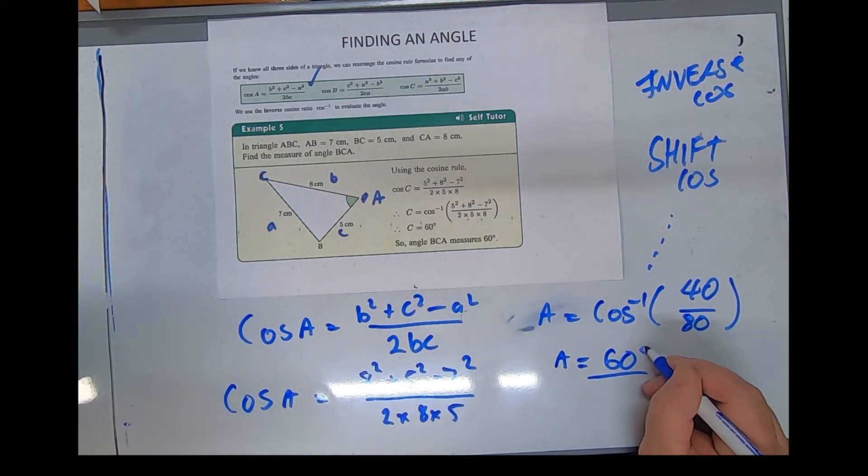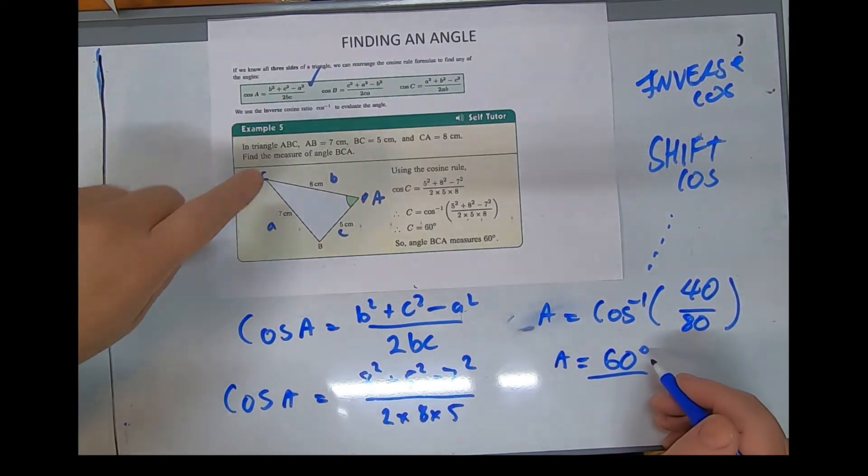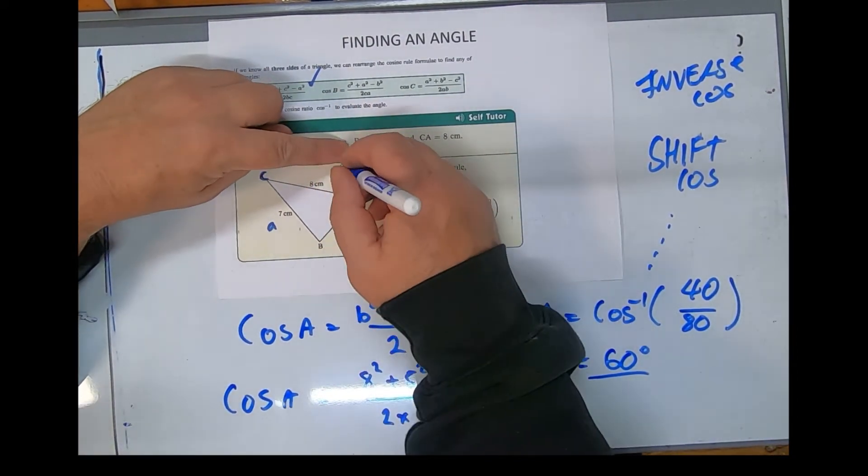Everybody can see the degree symbol, can't they? Okay, one last thing to talk about: this BCA means the angle from B to C to A, which does make sense for my new labeling system.